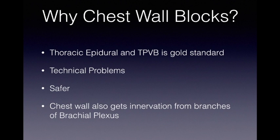The first question that comes to mind is: why do we need chest wall blocks when thoracic epidural and thoracic paravertebral block are called the gold standard technique to provide analgesia for chest wall surgeries? The answer is that thoracic epidural and thoracic paravertebral blocks are technically difficult — considered advanced blocks even with ultrasound-guided techniques.